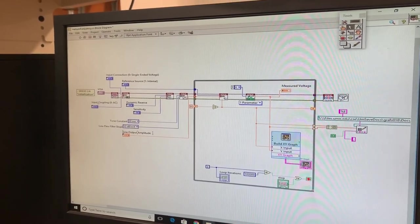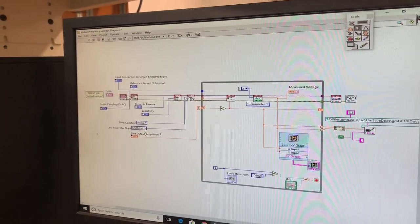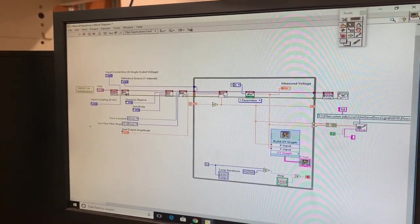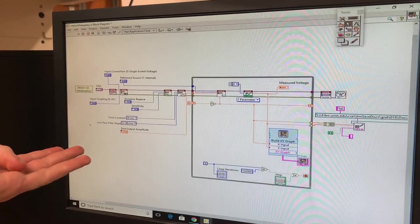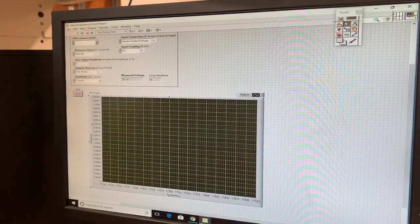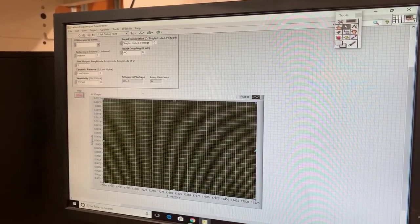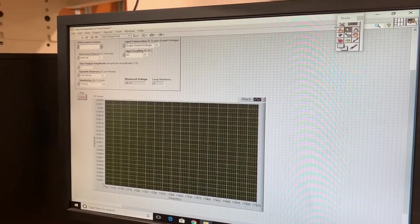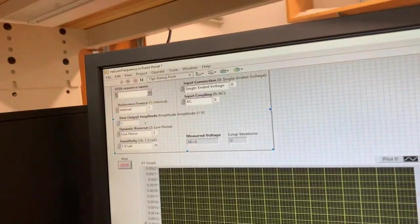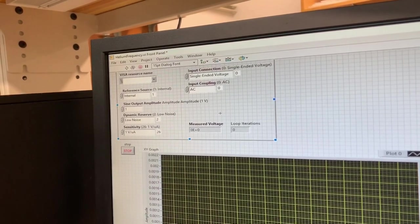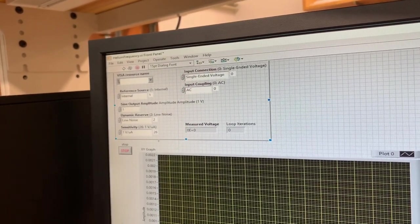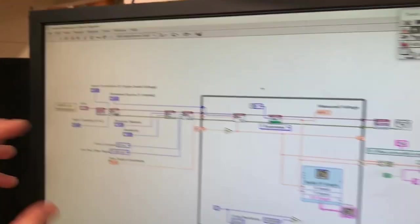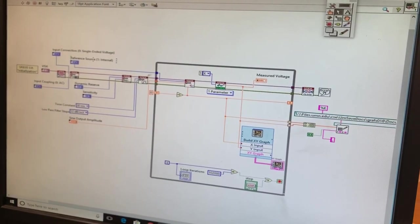Okay. So basically, all that this left hand side does is it's just initializing our lock-in amplifier. So all it sets is just every single initialization kind of component that we want. So when we go to the kind of operating panel here, we just set everything that we want to have set up. So single-end voltage, what our amplitude for our sine wave will be, and it can tell us then what it's measuring for the voltage and how many loops it's done and the sensitivity we want. So that just all sets it right when the program starts.